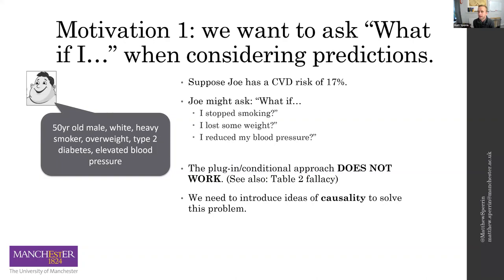What happens when these models are used in clinical practice is what you might call a plug-in or conditional probability type approach. To answer the question 'what if I stopped smoking?', the person using the tool might go back to the inputs, change 'current smoker' to 'ex-smoker', and that gives a new probability. Perhaps that can be interpreted as what the risk would be if we intervened and stopped smoking, and the difference could be the effect of smoking. But that doesn't work — the reason is that these are prediction models and they're not designed to answer these kinds of questions. The coefficients of a regression model don't have that interpretation, and changing the inputs won't give us this interpretation in general.